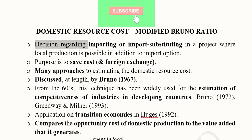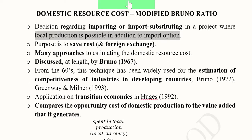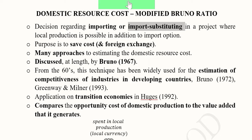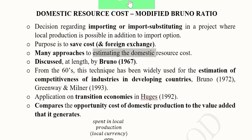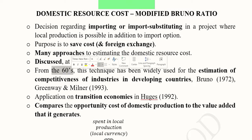The decision concerns importing or import-substituting for a certain project where local production is possible in addition to the import option. The purpose is to save cost and foreign exchange — if we choose the cheaper alternative, either importing or import substitution, that cost saving gets translated into foreign exchange savings. There are a few approaches to finding the domestic resource cost discussed in detail by Bruno in 1967.